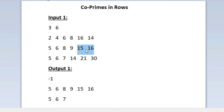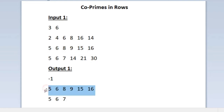Next we check 15 and 16. Their HCF is equal to 1, so they are co-prime and we print 15 and 16. All the integers in the second row are co-prime when paired with either their left or right neighbor, so we print all integers in the second row as output.